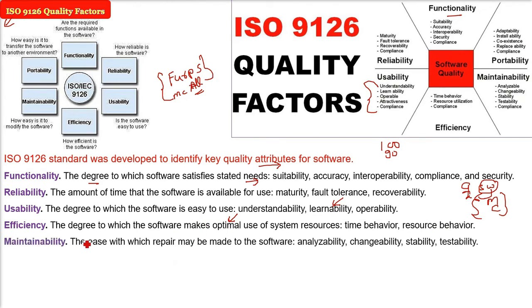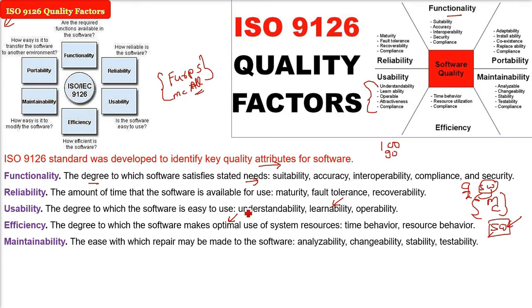Maintainability covers the ability to fix problems and bugs — what we call the repair of the software. The underlying factors here are analyzability, changeability, stability, and testability.